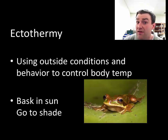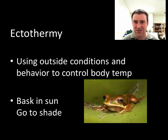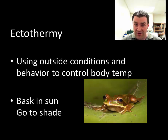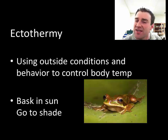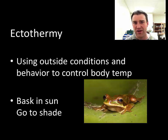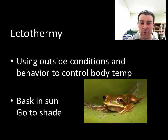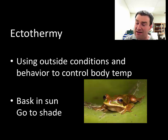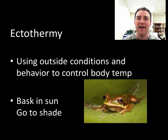Ectotherms are capable of regulating their body temperature — not internally, but by using their outside environment and behavior. A frog can't cool down internally, but it can jump into a pool or go into the shade to cool down, and if it's getting too cool it can bask in the sun to warm up. So ectotherms can definitely control their body temperature, just with external help and behavior.